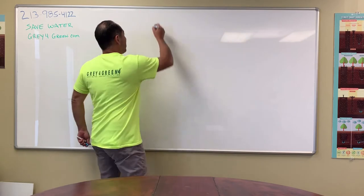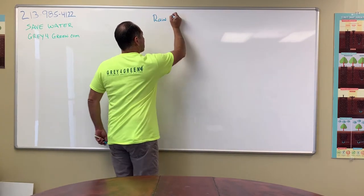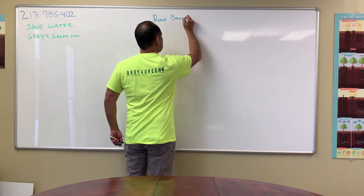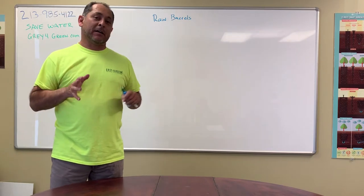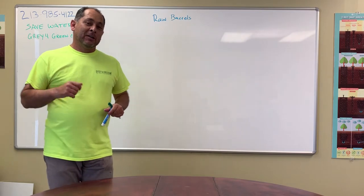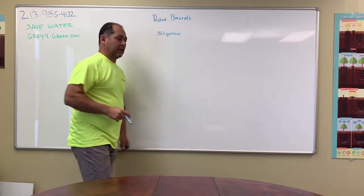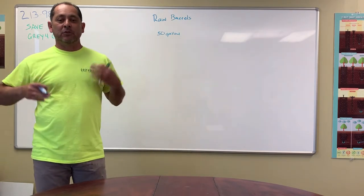So rain barrels are cool. I think they're nice that they offer them. But the key with rain barrels is that it doesn't rain much here in Southern California. So a typical rain barrel is about 50 gallons. When it rains, it's going to fill up 50 gallons and then you're going to have 50 gallons to use.